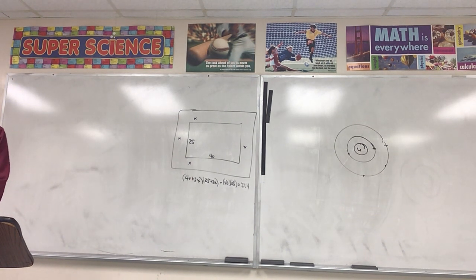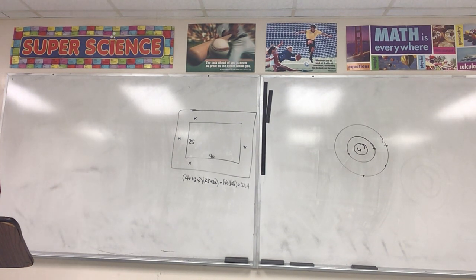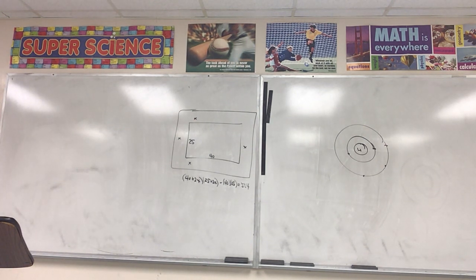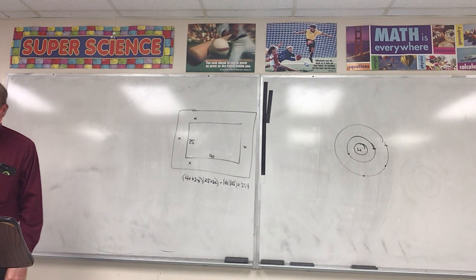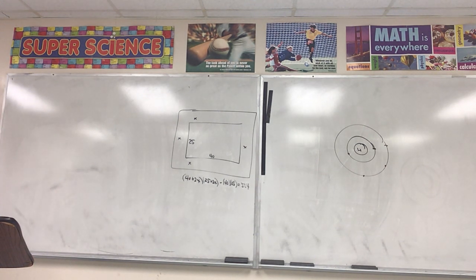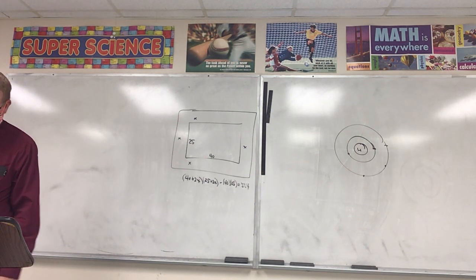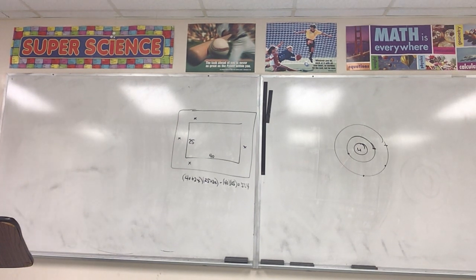Number four: What are the two ways that atoms can acquire a full outer energy level? Really it's probably three — sharing, gaining, or losing. Gaining and losing kind of go together because if one gains that means another one loses. That's why they always say two, but I think it's three: losing, gaining, or sharing. As long as you have those three.